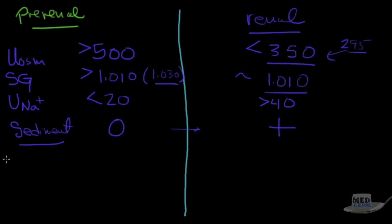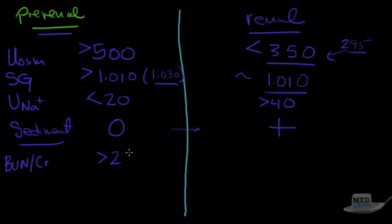The BUN-to-creatinine ratio: in pre-renal it's greater than 20, because BUN is not being filtered well and is also being reabsorbed at the proximal convoluted tubule. In renal failure, the ratio is usually less than or equal to 15.